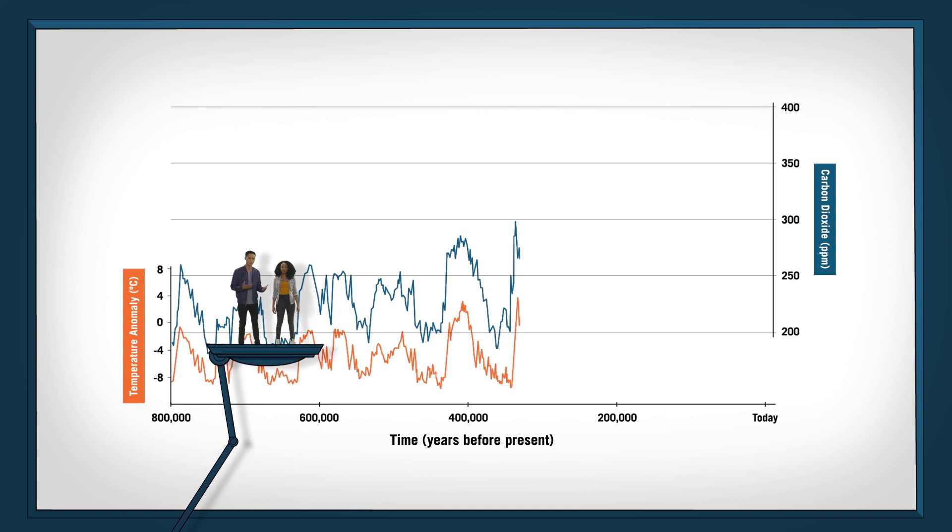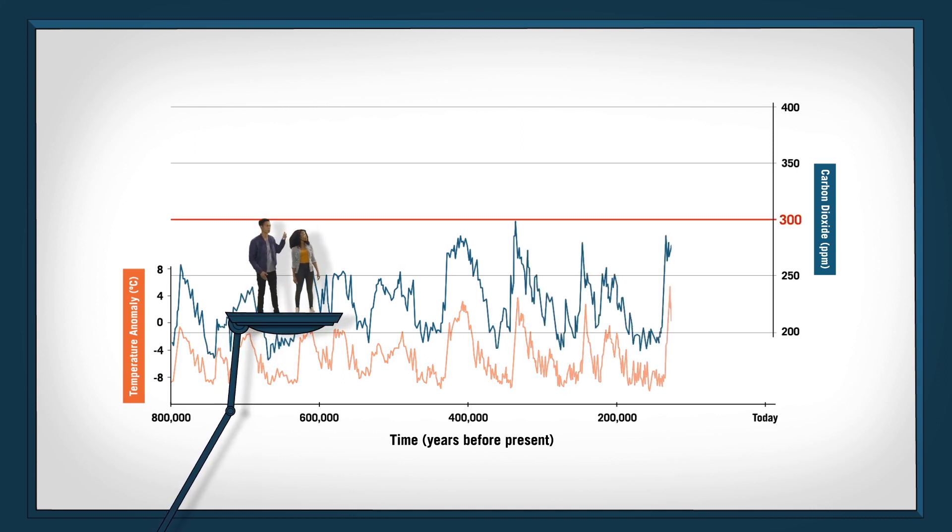It makes sense. The more CO2, the stronger the greenhouse effect, the warmer our planet gets. This entire time, CO2 levels have never gone above 300 parts per million, or ppm.